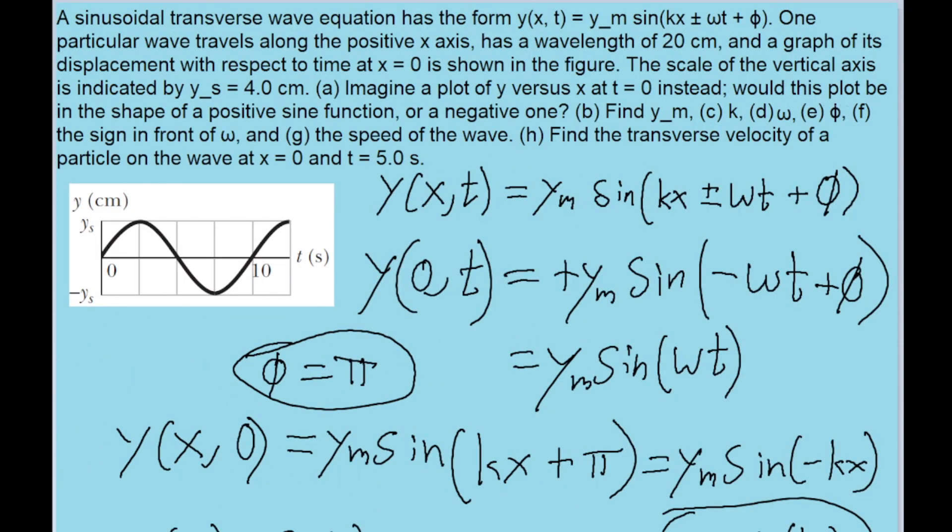Part e asks for the phase shift phi, which we found in part a as being equal to π. So that's the answer to that. And part f asks for the sign in front of the omega, which again we found in part a. It's negative.